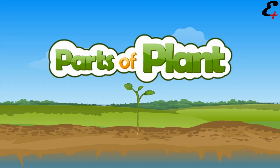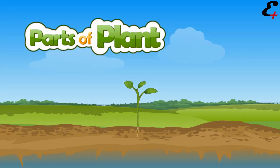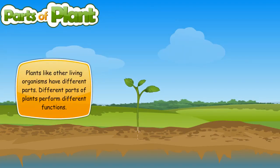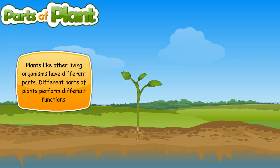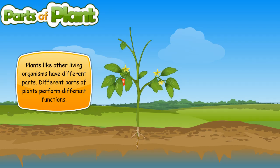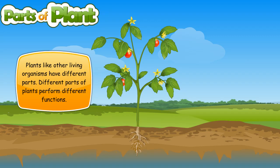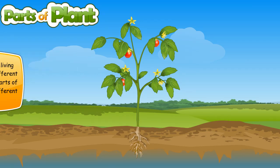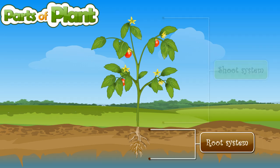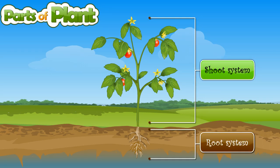Parts of Plants. Plants, like other living organisms, have different parts. Different parts of plants perform different functions. A plant is mainly divided into two parts: the root system and the shoot system.